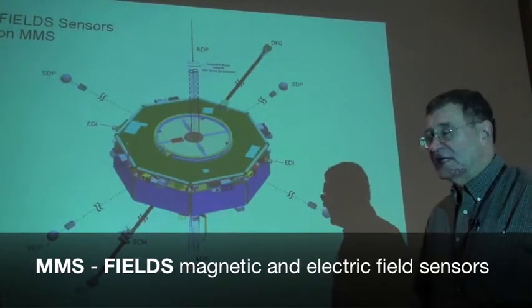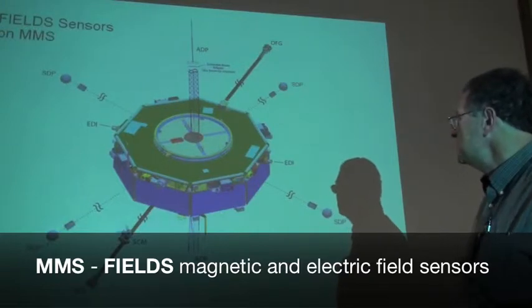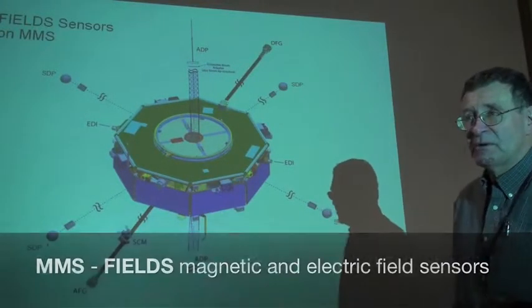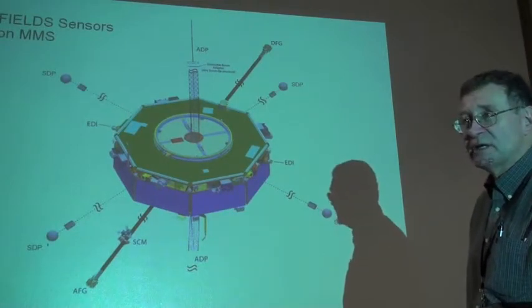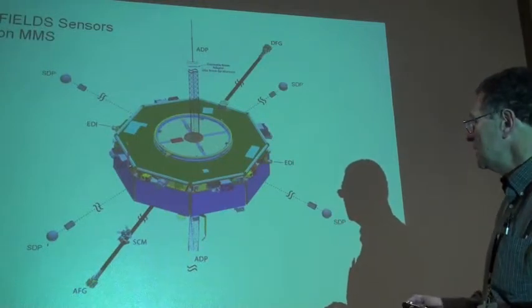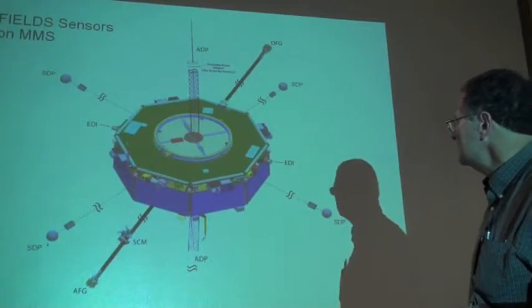To measure the electric and magnetic fields which are critical to understanding reconnection, MMS on four identical spacecraft is probably the most comprehensive and accurate collection of magnetic and electric field sensors ever flown in space. The spacecraft is about three meters in diameter.